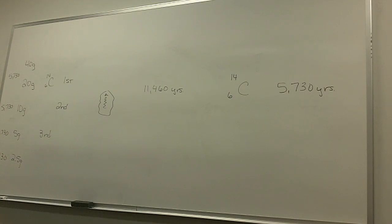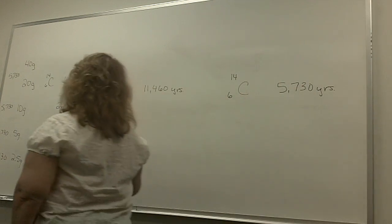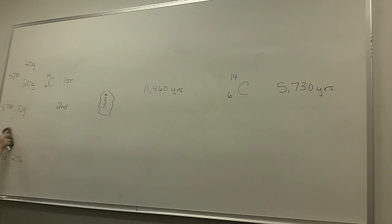And we know, if you look, carbon's got 5,730 years. Potassium is 1.3 times 10 to the ninth. Radium, 1,600 years. Most of these things have pretty long half-lives. It's a little scary when you think about nuclear energy.